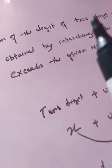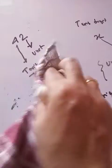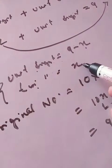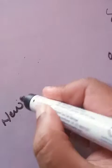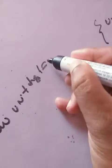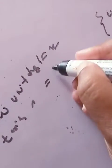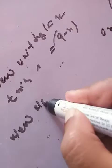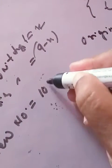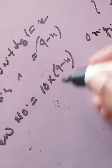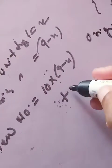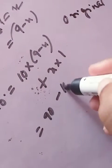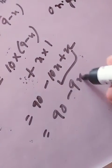Now let's move to the second sentence: the number obtained by interchanging the digits. Interchanging means we change the positions — the tens digit goes to the unit place and the unit digit comes to the tens place. So the new tens digit is 9 minus x and the new unit digit is x. The new number is 10 times (9 minus x) plus x, which gives 90 minus 9x.